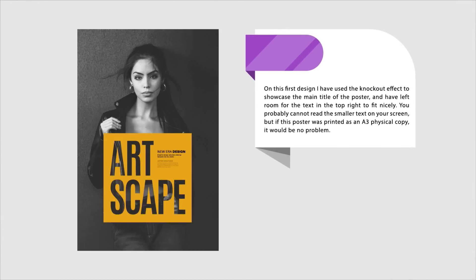I've used the knockout effect to showcase the main title of the poster, and I've also left some space in the top right to fit some other text in neatly. If this poster was printed out as an A3 copy there would be no problem reading the smaller text. The knockout effect works really well on overlaying imagery — I personally made this image black and white with the knockout section a bright contrasting color, which works really well.